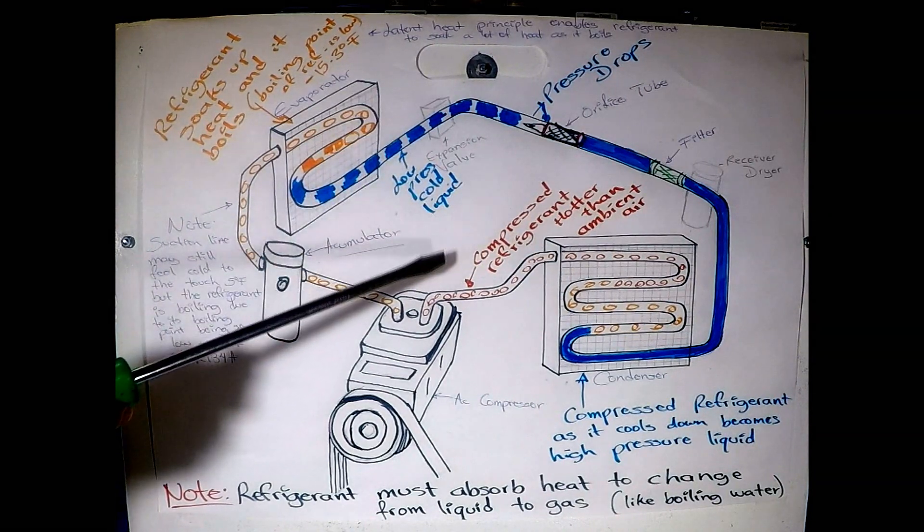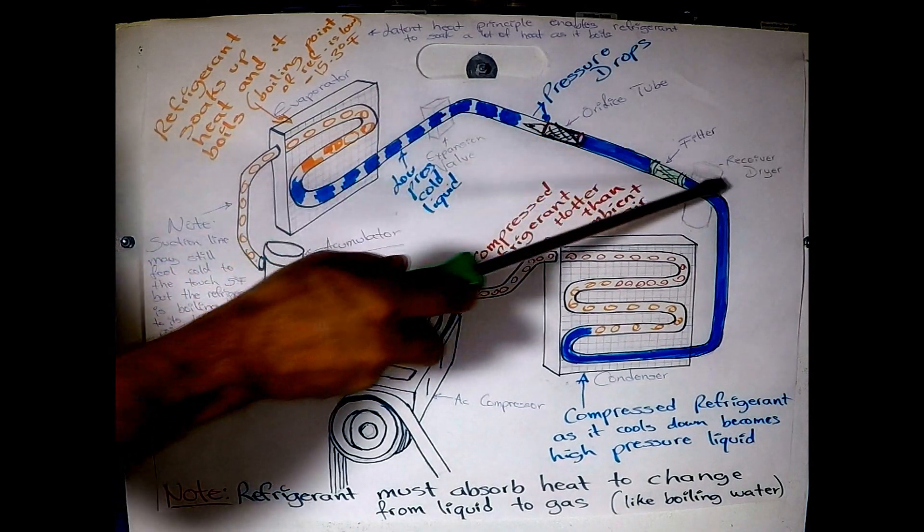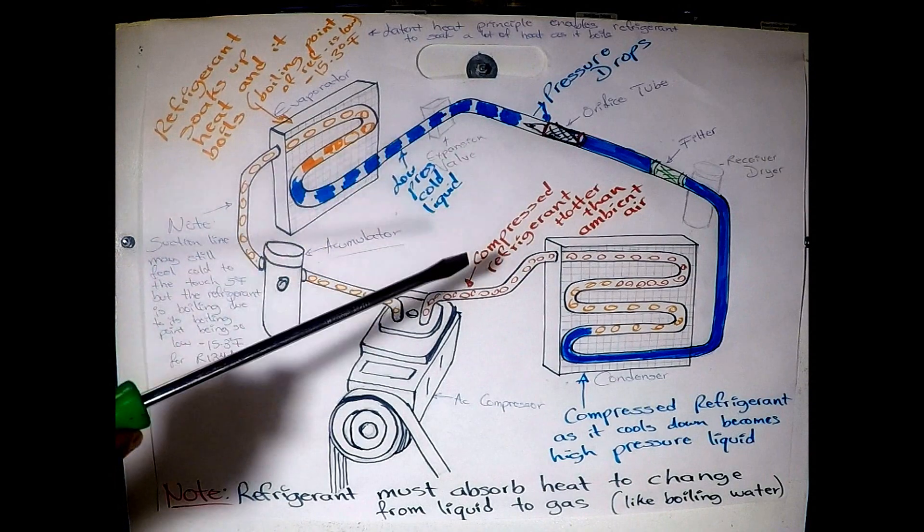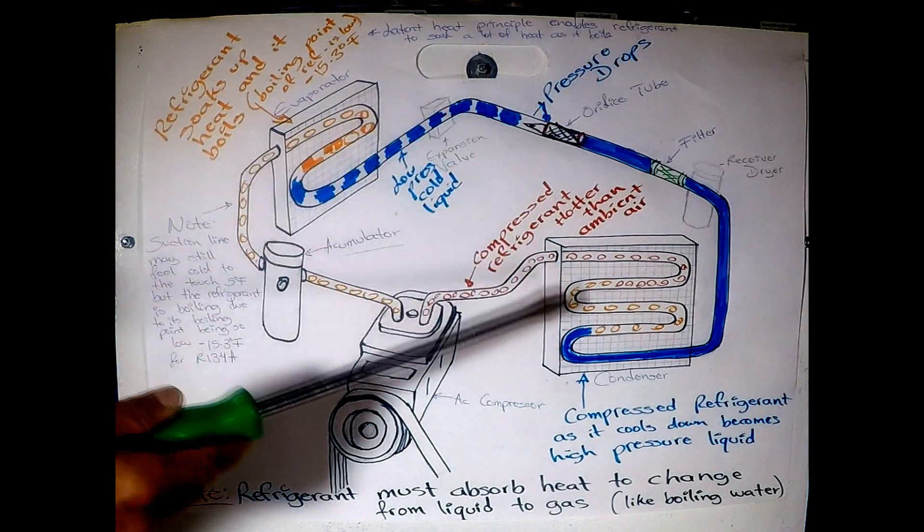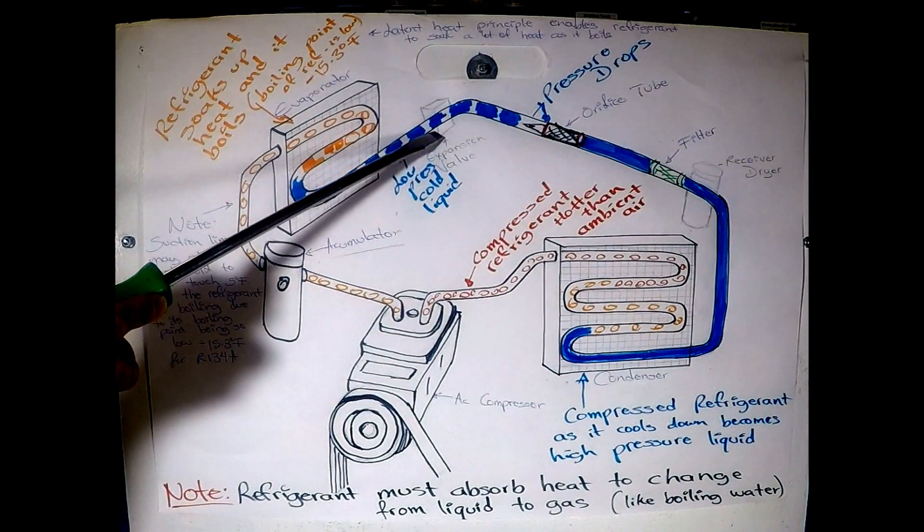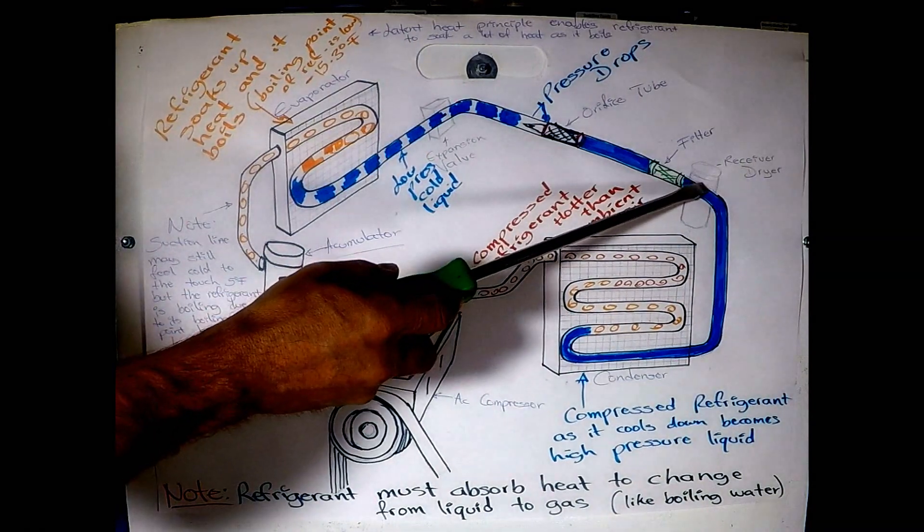Now this is one system, and with a pencil I wrote two components of an entirely different system. Depending on the make of the vehicle, it could have either or. The remaining components will be pretty much the same, but the other system will have an expansion valve instead of an orifice tube, and instead of an accumulator, it's going to have a receiver dryer.